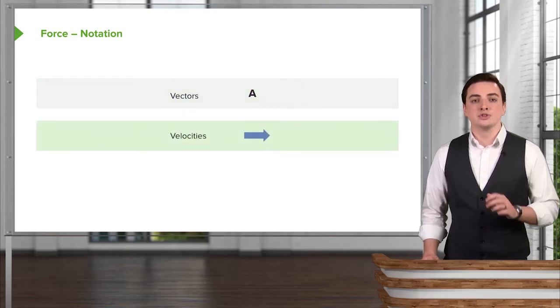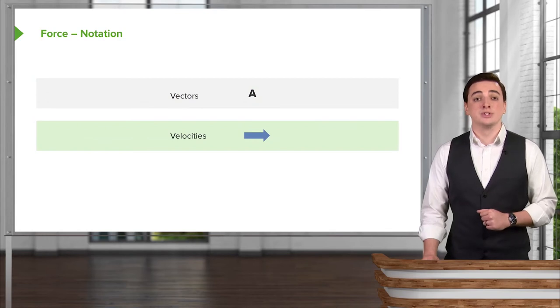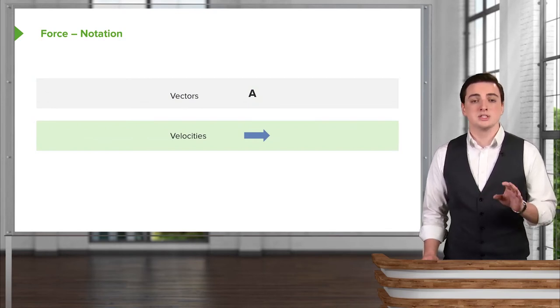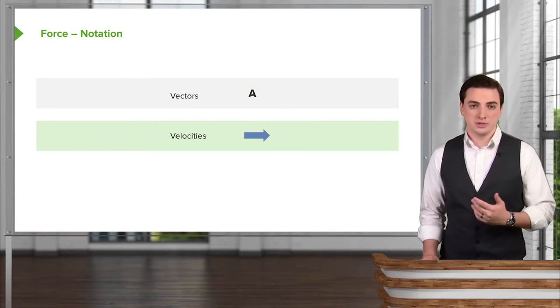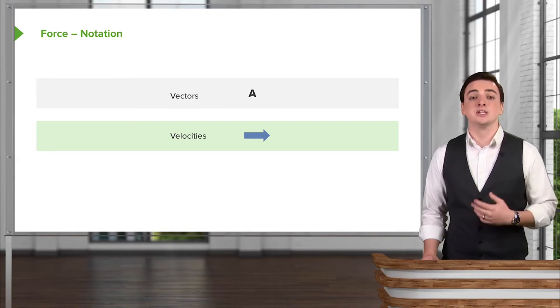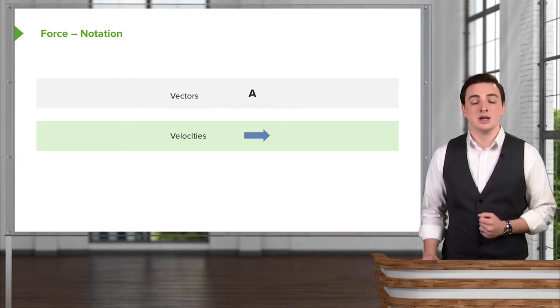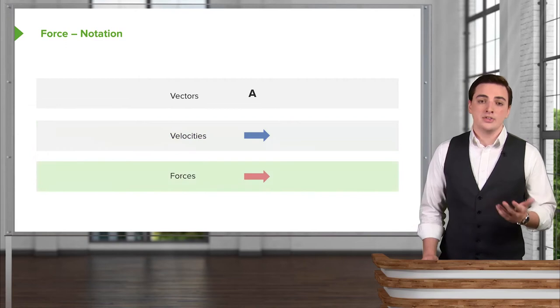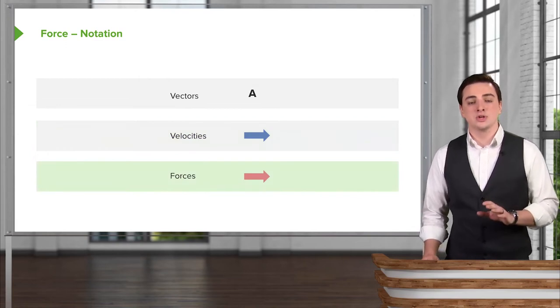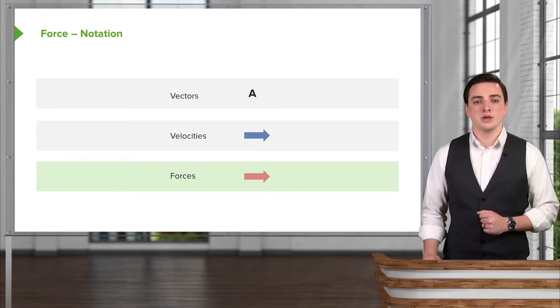For velocity vectors, I'll use blue arrows in the diagrams that we're going to draw. So if you see a blue arrow, it is not a force contributing to the motion of an object, it's just representing the actual motion, the actual velocity of that object. On the other hand, we'll use red arrows for actual forces acting on objects, trying to push them one way or the other.